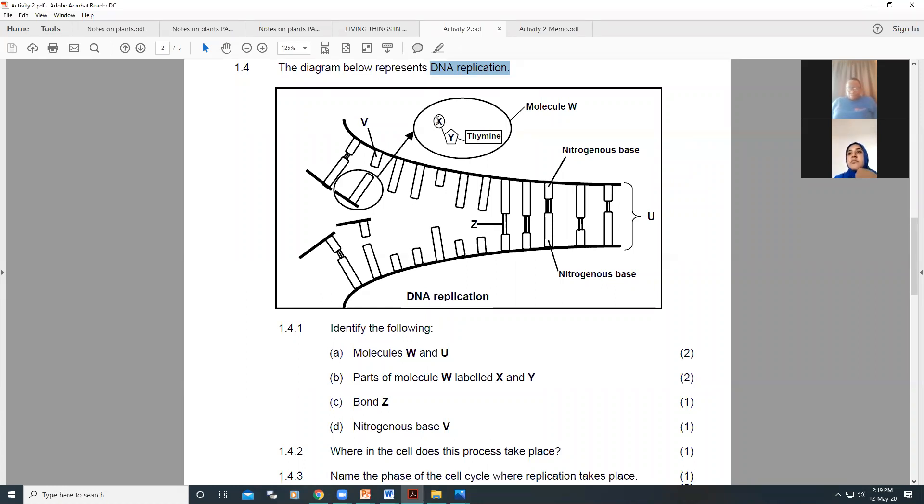Then you've got thymine. And then these three things collectively make up molecule W. What would molecule W be? It's made up of a phosphate, a deoxyribose sugar, and thymine, which is one of the nitrogen bases. Together, we call that a nucleotide.